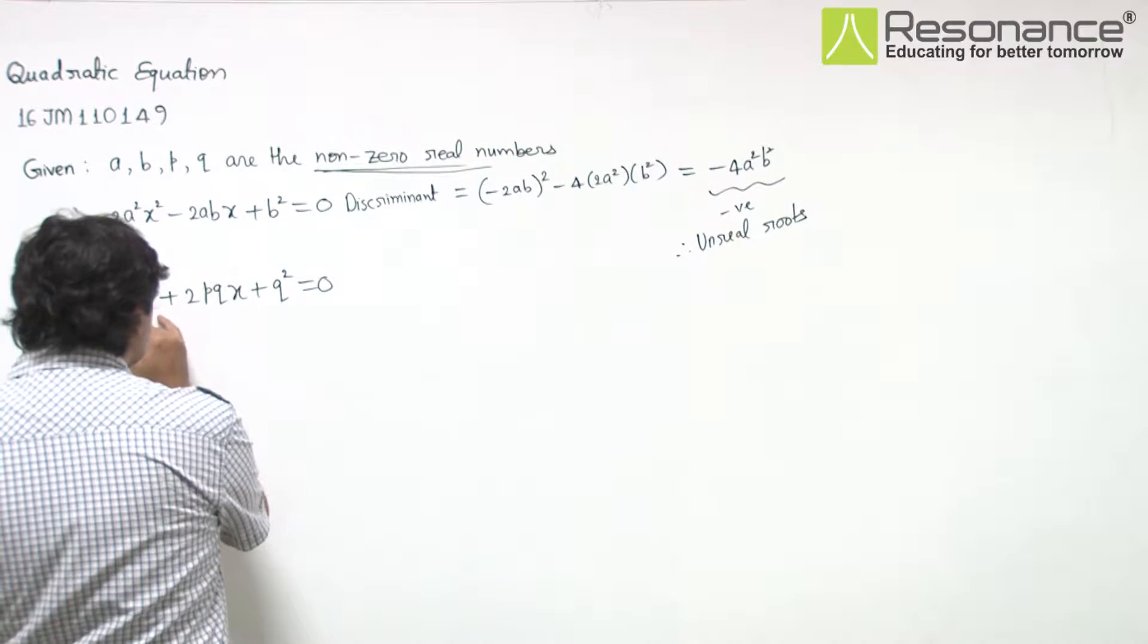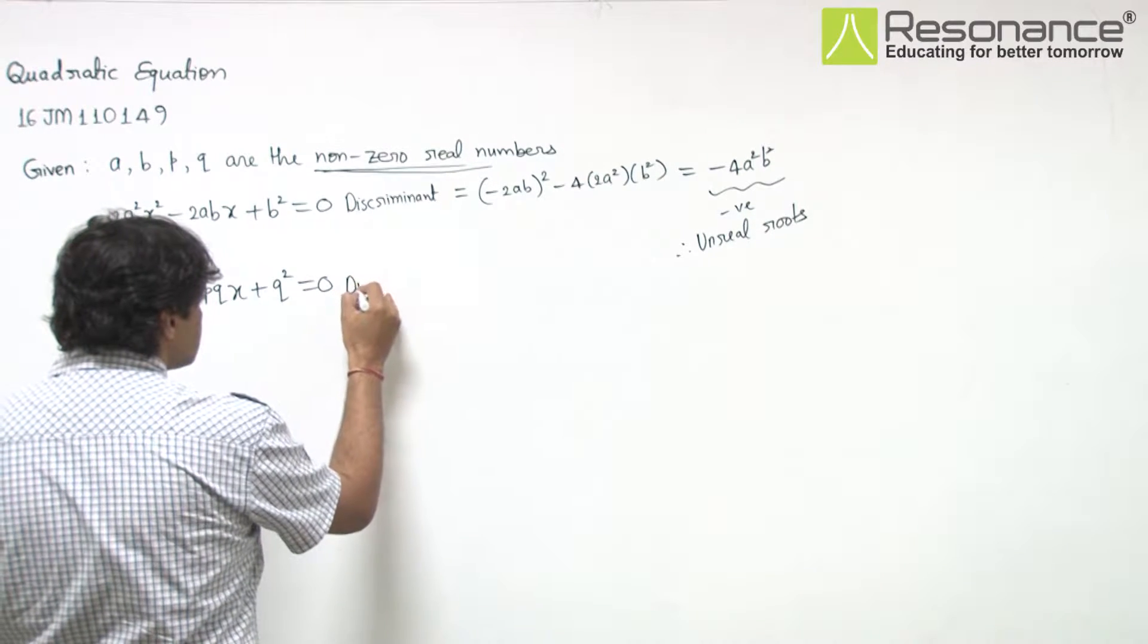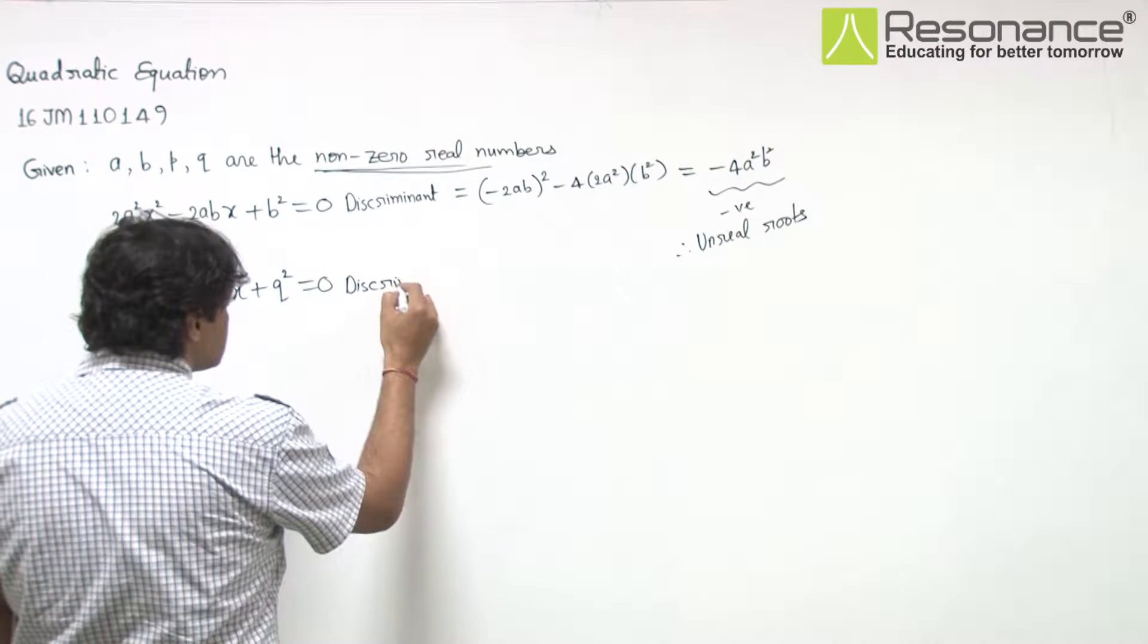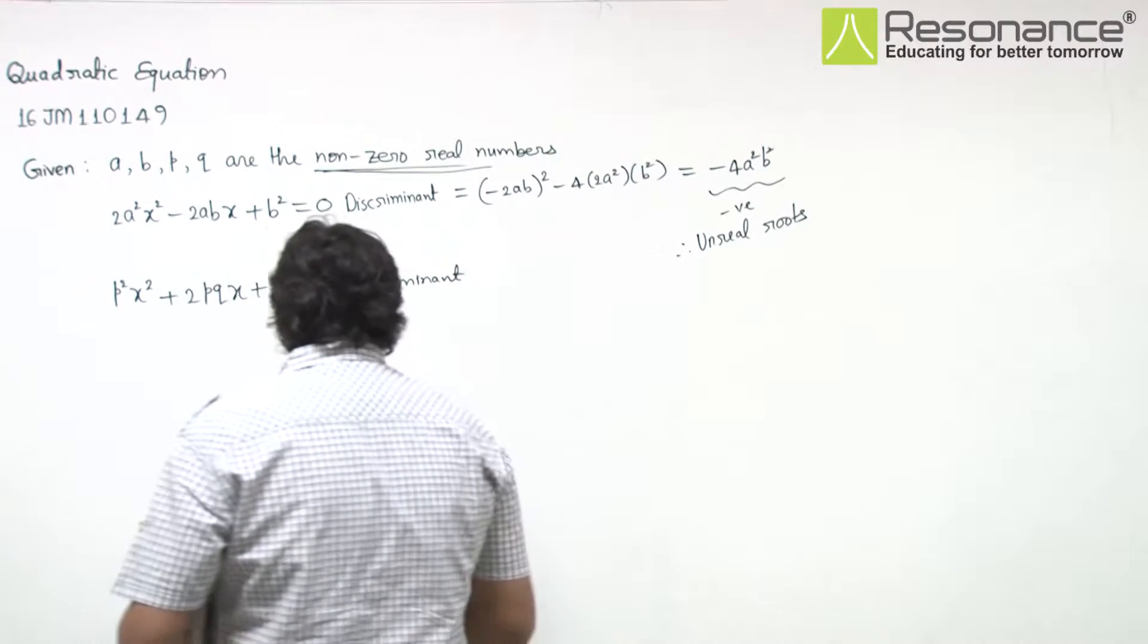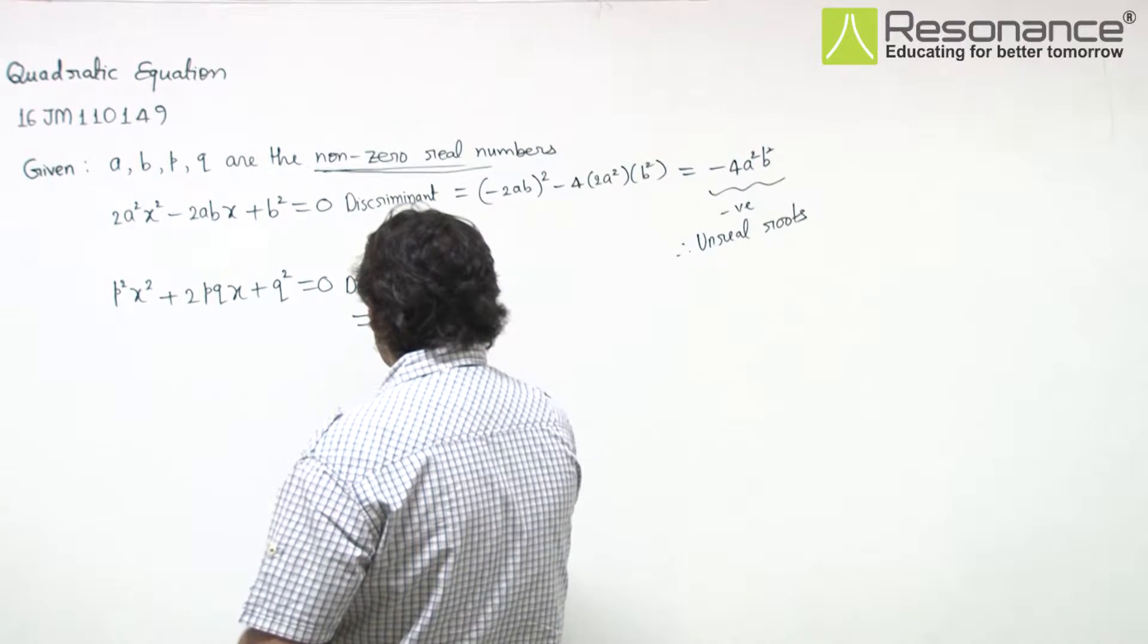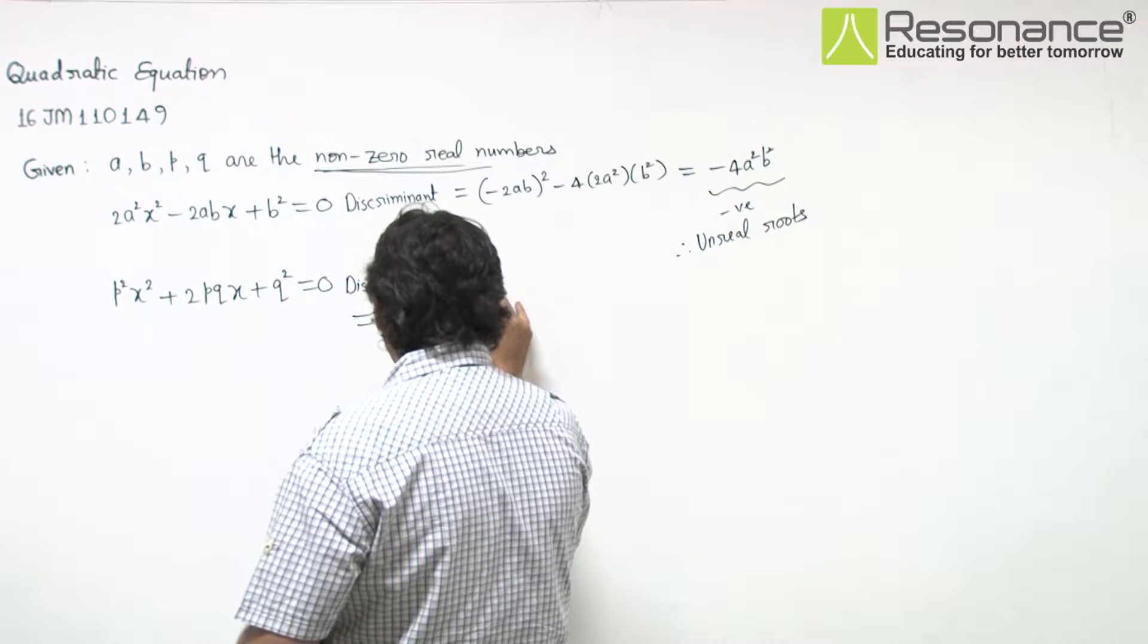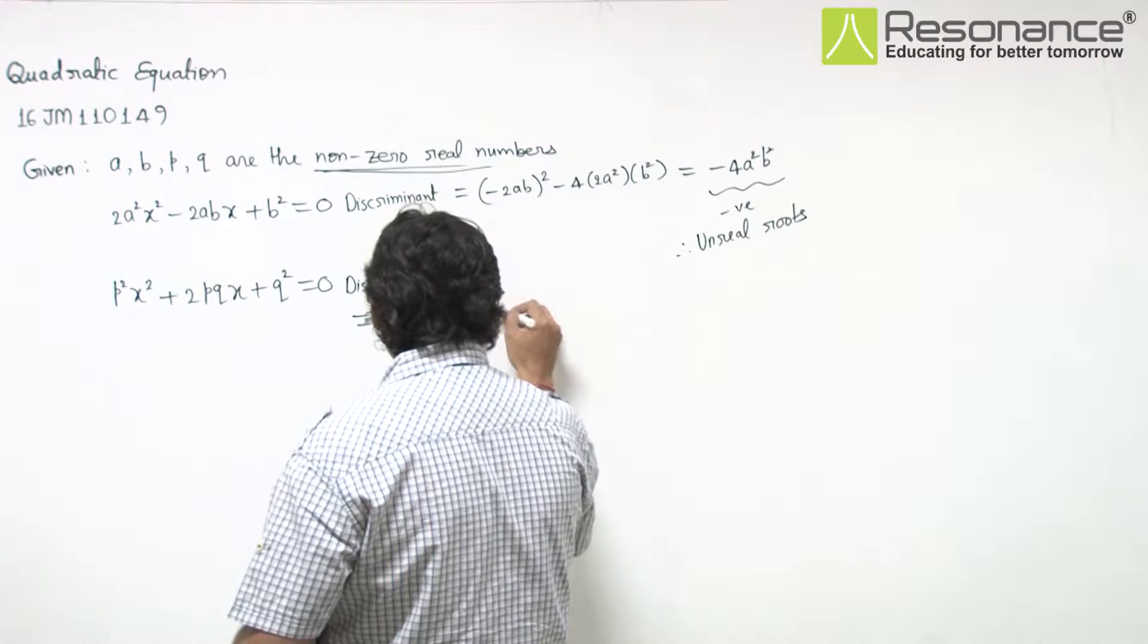Now for the second equation, I am making the discriminant. So this is 2pq whole square minus 4p square into p square.